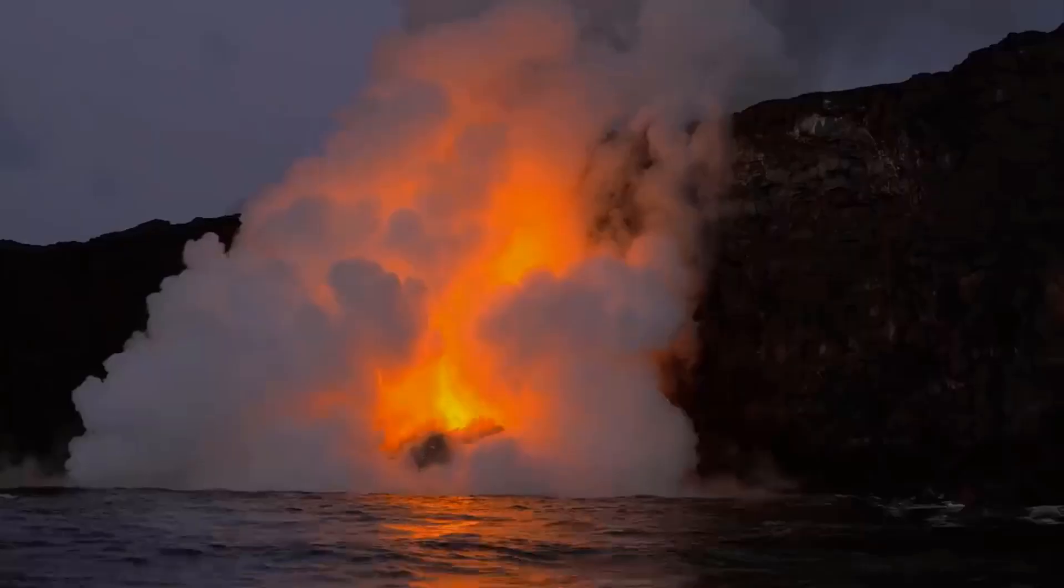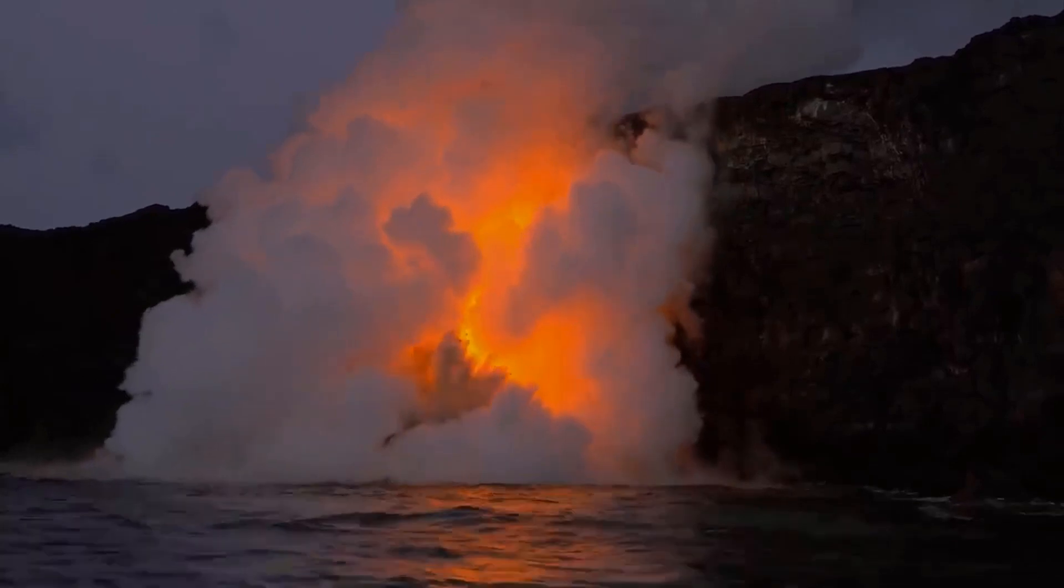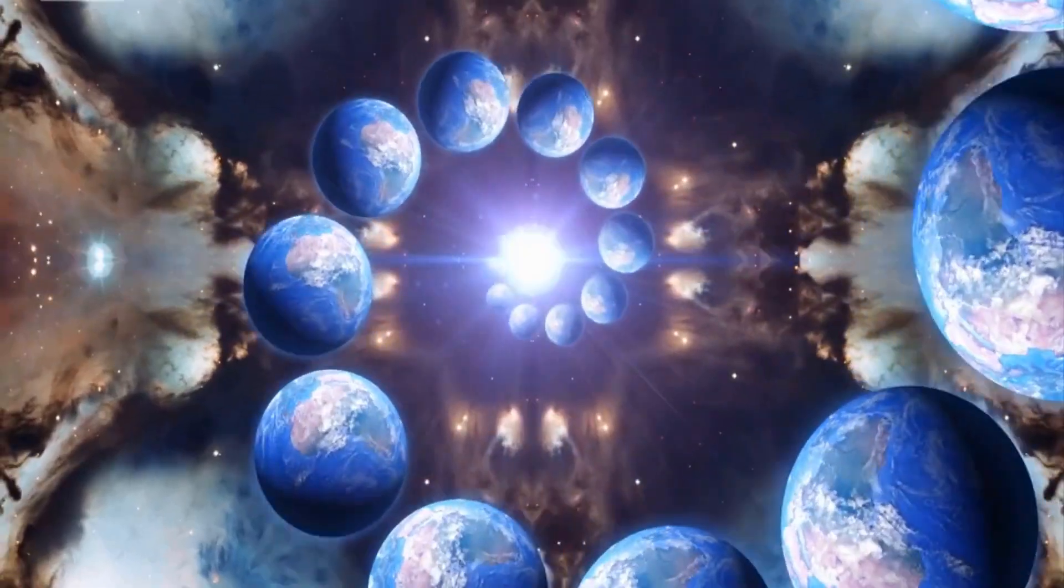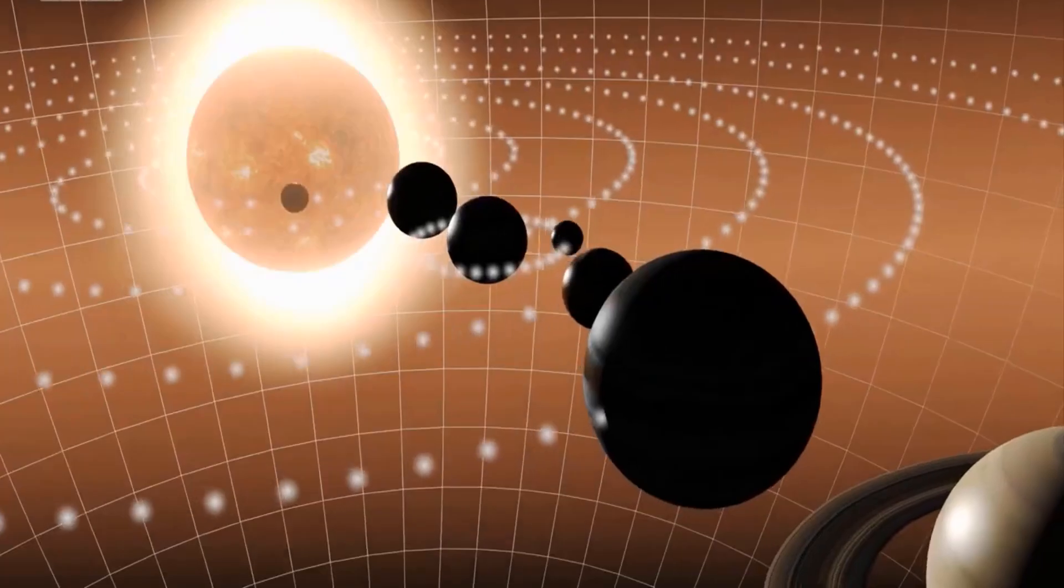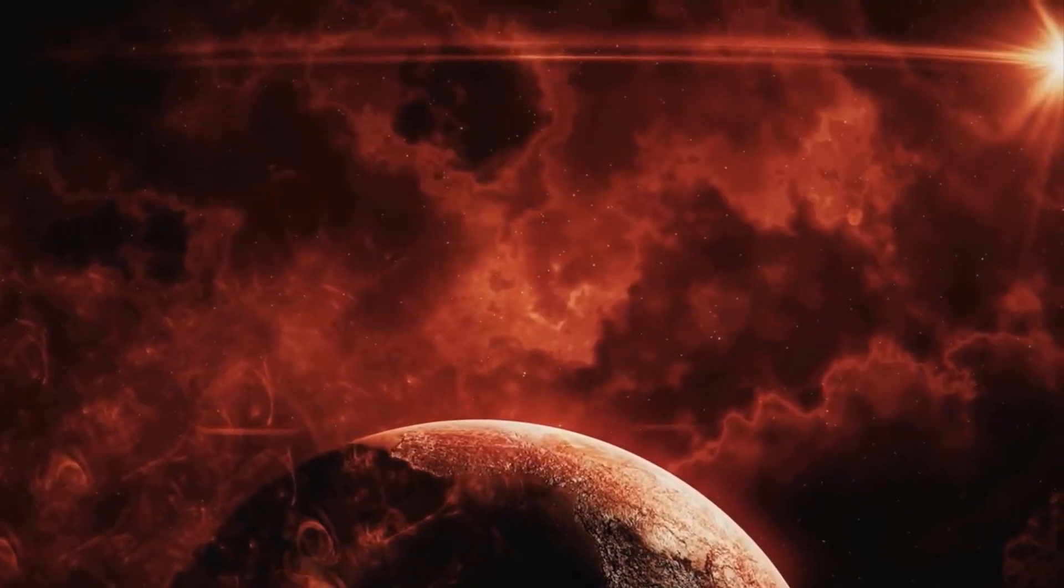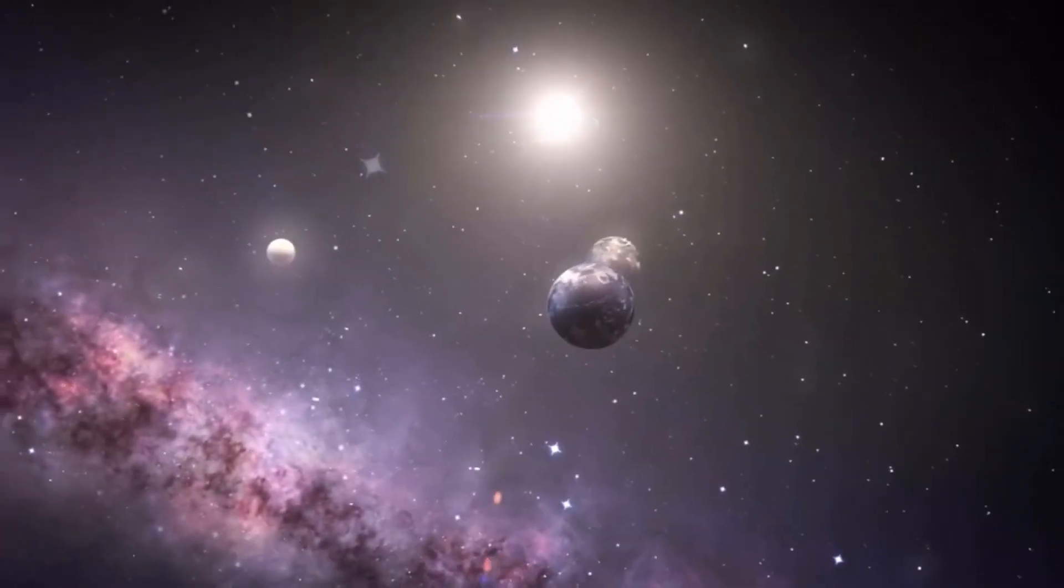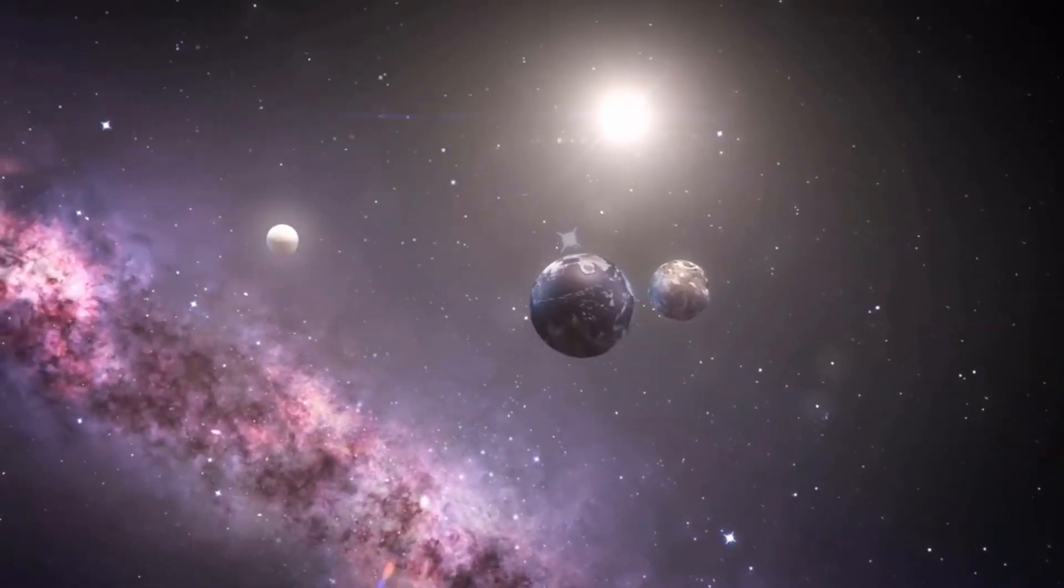A super habitable planet will also likely have more mass than the Earth. This would allow for more complex terrain and a larger area of surface water compared to our planet. As a result, this improves the chances that the planet will have an active core, plate tectonics, and a stable mantle.